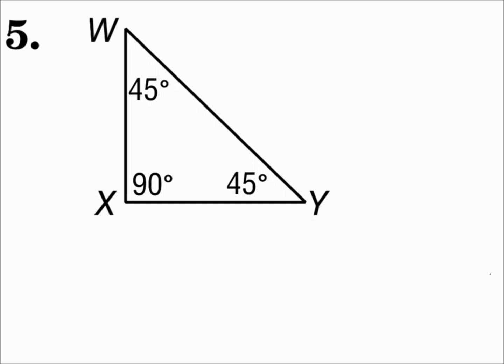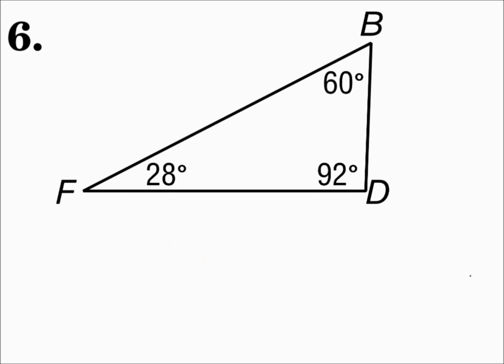Number five — this one has a right angle, so it's a right triangle. Look at the angles on number six. Number six has an obtuse angle, so it's an obtuse triangle.